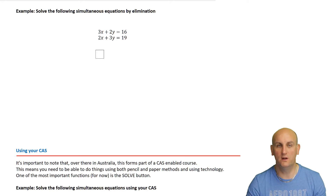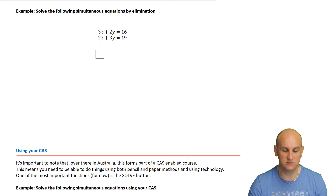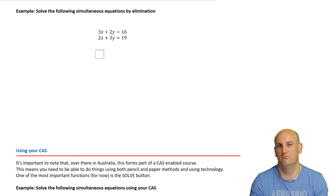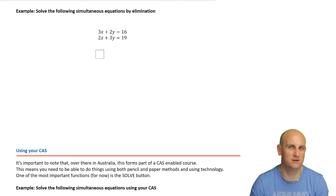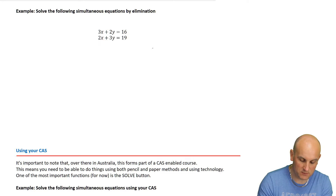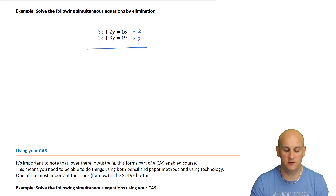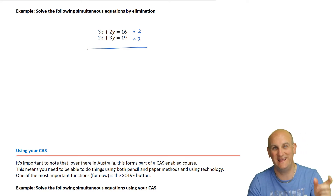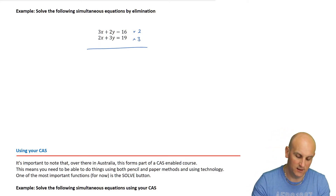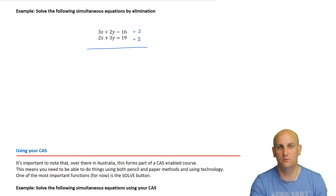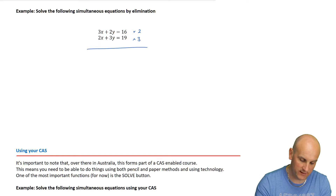I need to turn one of those coefficients to be the same - either the x's or y's. I'm going to multiply the top equation by 2 and the bottom equation by 3, which will turn both x coefficients into 6. Word of warning: when you multiply, you have to multiply every single term by the same number.